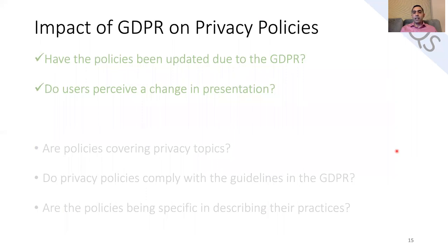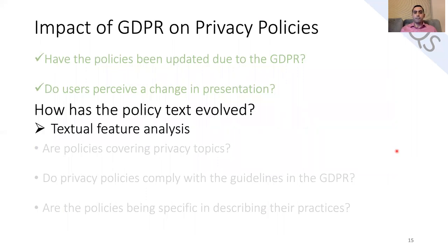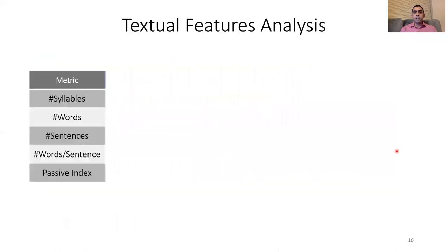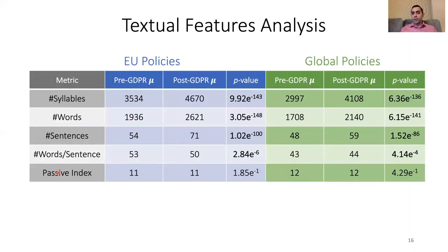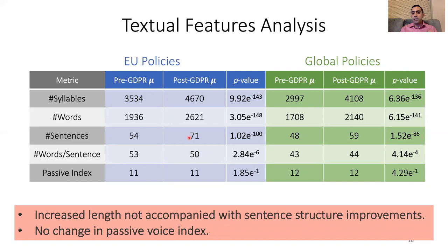The last step of the content-agnostic analysis was looking at the textual features of privacy policies — in particular, the length of the policy and the passive voice index. For both sets, policies got considerably longer, as seen from the number of syllables, words, and sentences. However, the sentence structure remained similar: the number of words per sentence was practically the same pre- and post-GDPR for both sets, and the passive index was very similar between pre- and post-GDPR policies. So policies got longer, but their structure did not change much.